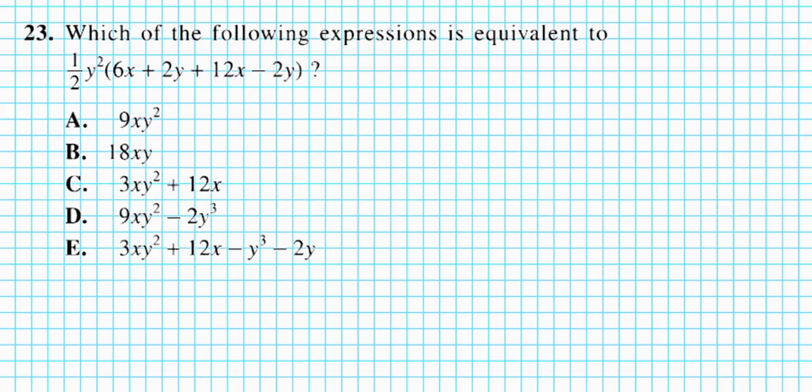Let's take a look at 23. It says which of the following expressions is equivalent to this product right here? So we have one half y squared times 6x plus 2y plus 12x minus 2y.